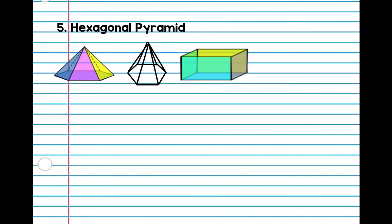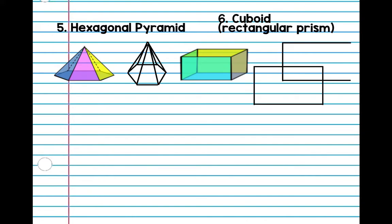Number six — you guys know what this one is. We have a new name for this polyhedron. We're not going to call it a rectangular prism; we're going to call this a cuboid, because it's easier to spell and write since we're going to be working with this a lot. Or you can just use rectangular prism — it's the same thing. Do the same thing as we did for the cube: draw two rectangles and connect all corners.